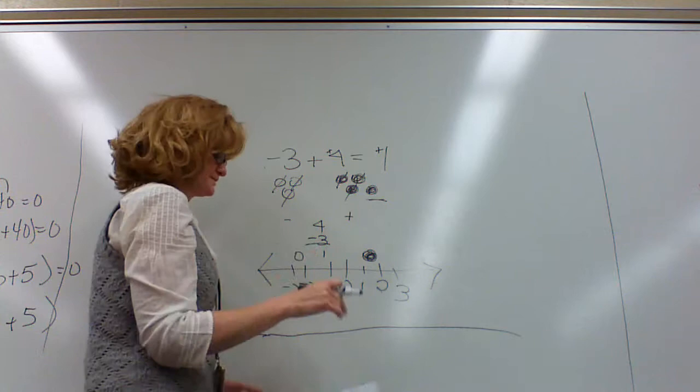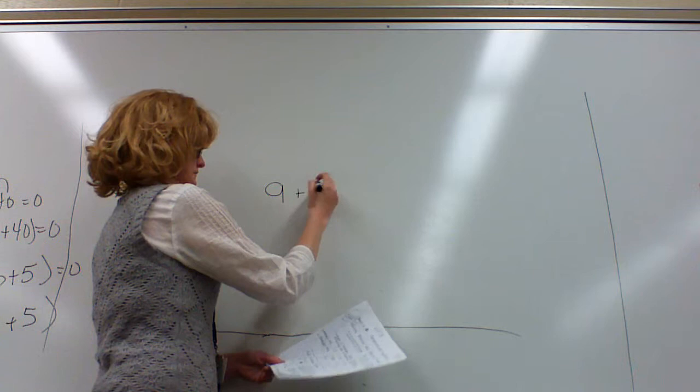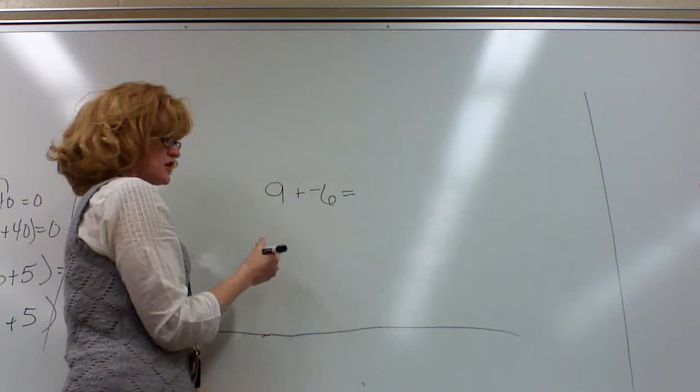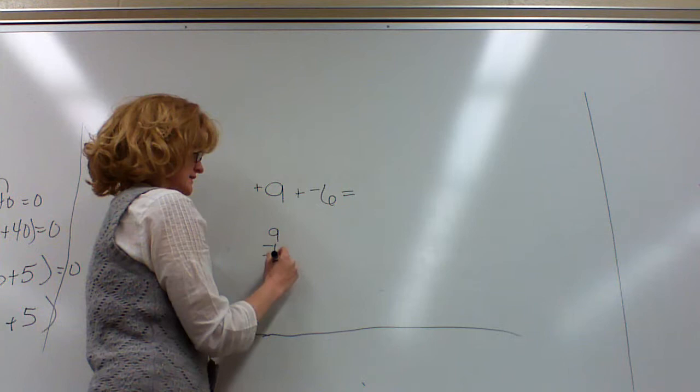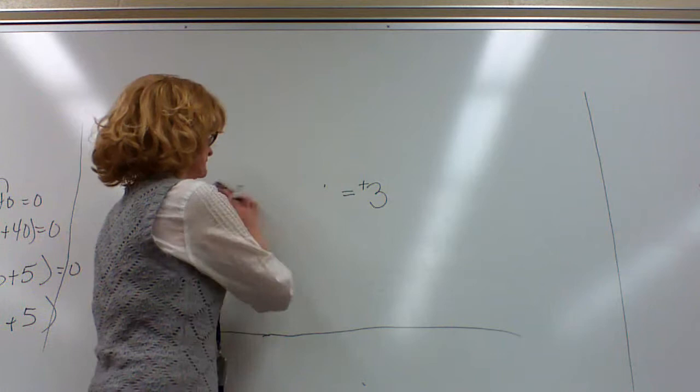Let's do a few more examples. 9 plus a negative 6. These are opposite signs. One of them is positive, one of them is negative, so we're going to subtract. 9 minus 6 is 3. The answer is 3. Which number is bigger? The 9 is bigger, so I'm going to keep that positive.